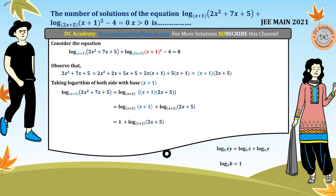By applying the properties of logarithm, we simplified the first expression: log(2x²+7x+5) with base (x+1) equals 1 + log(2x+5) with base (x+1). Now our job is to simplify the second expression, which is log of (x+1)² with base (2x+5).